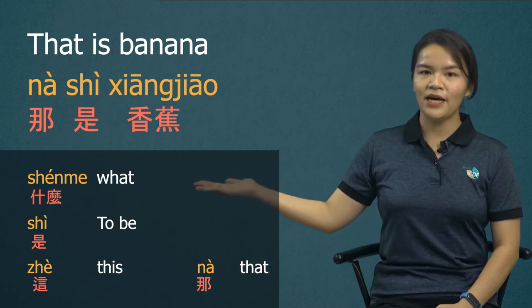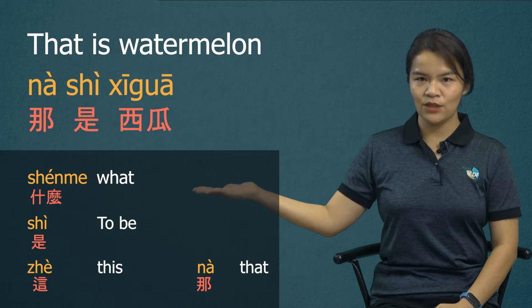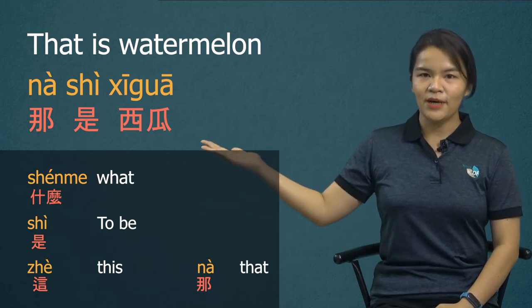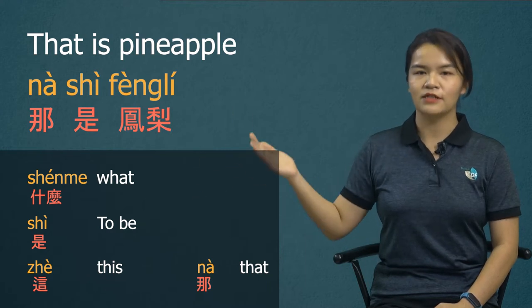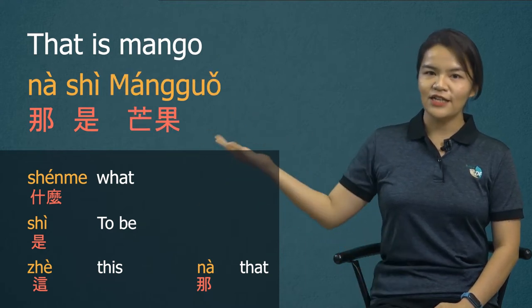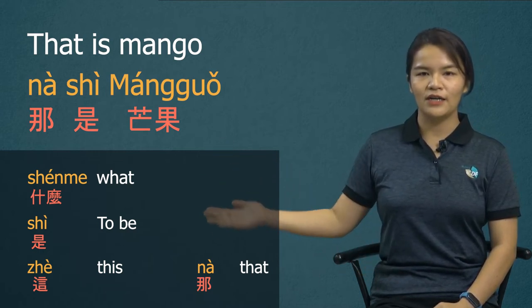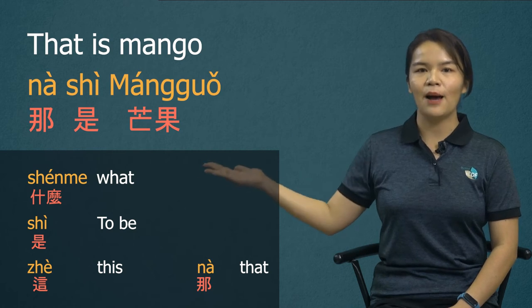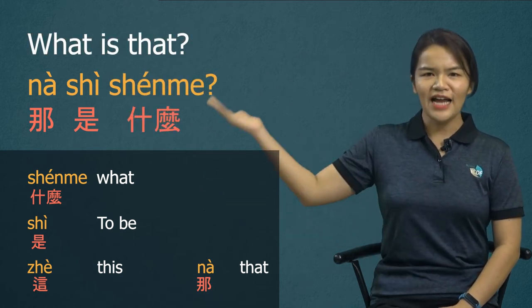那是什么? 那是西瓜 — 西瓜, watermelon. 那是什么? 那是凤梨, pineapple. 那是凤梨. 那是什么? 那是什么? 那是芒果. 那是芒果.